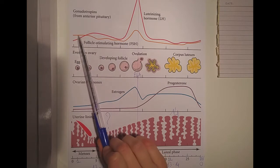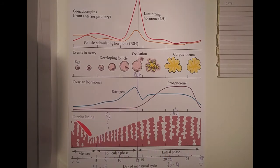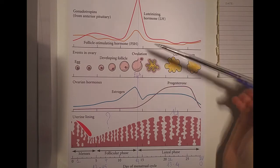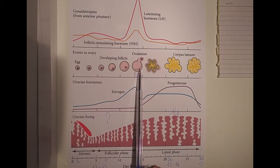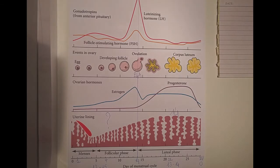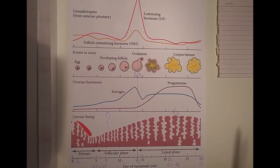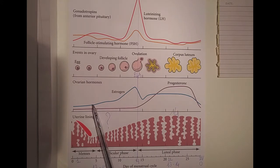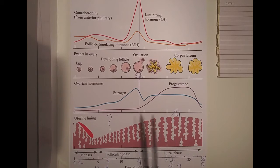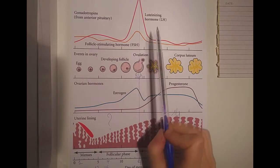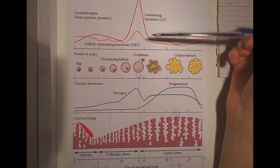In the first part of the cycle, FSH and LH have quite low concentration in the blood. But they're important because FSH especially induces egg growth and maturation, which is extremely important to get to ovulation. We also have estrogen starting to be produced, and progesterone is present but in almost negligible quantities, so we'll focus on FSH, LH, and estrogen.